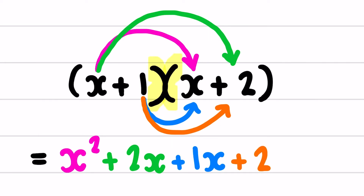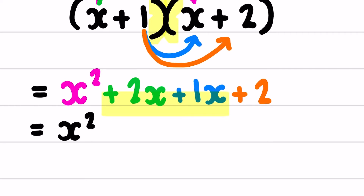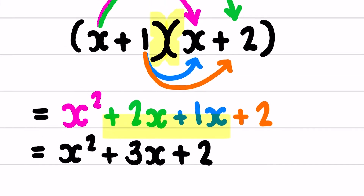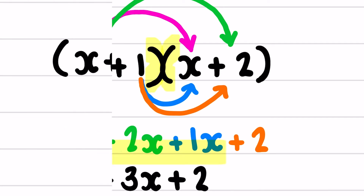Now I'm going to collect my like terms — those are the middle terms. So I have x squared carried down. Positive 2x plus 1x is positive 3x. And carry down my plus 2. So (x + 1)(x + 2) gives me x squared plus 3x plus 2.